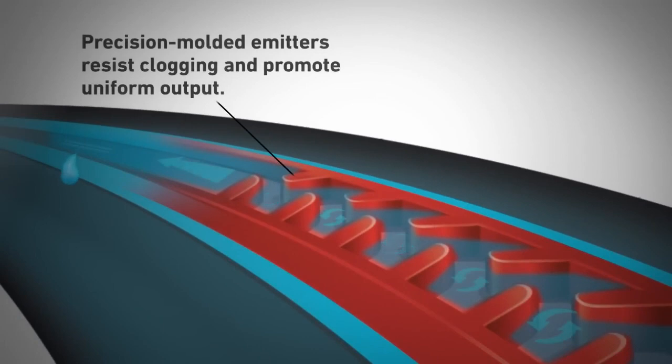The tape's precision molded emitter has an extra large cross sectional area that is designed to resist clogging from debris, root intrusion, and soil ingestion.